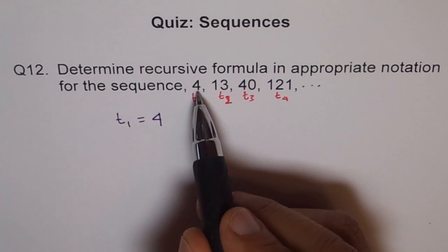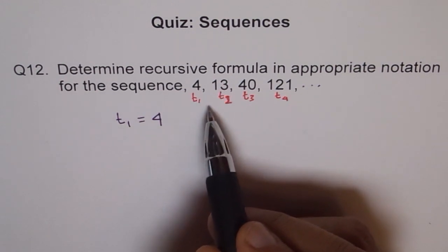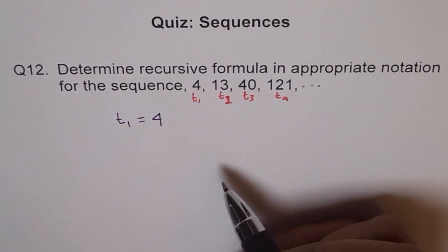So if we know 4 and we know the formula to get the next term from the previous term, we can find 13. Now if we know 13, then we can find the next term using our recursive formula.